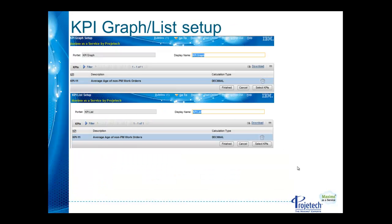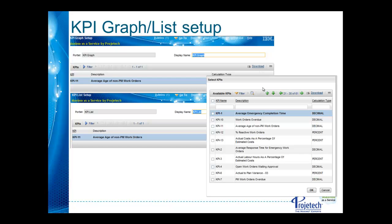When you go to design a KPI portlet, whether it's a graph or list, the design process is essentially the same. You move into the design portlet, choose 'Select KPIs,' and from there you get a list of available KPIs that you can filter and select to build your portlet design.